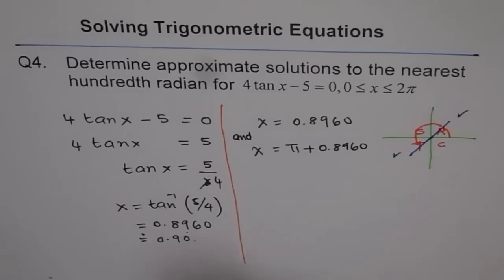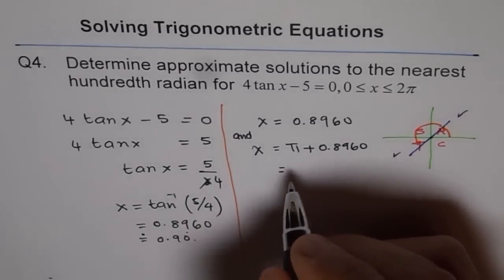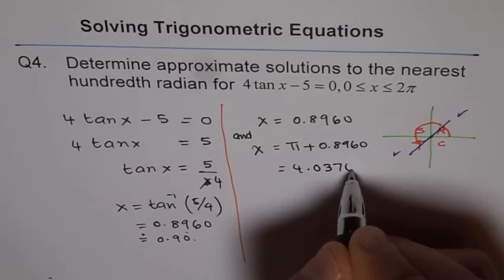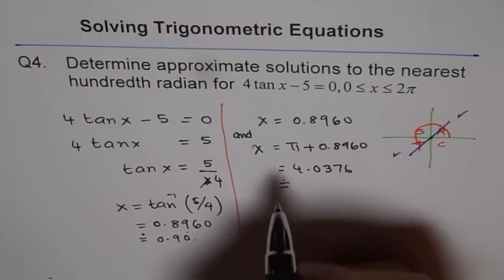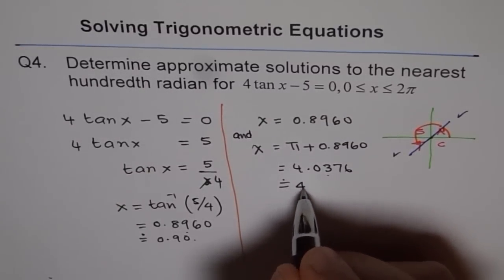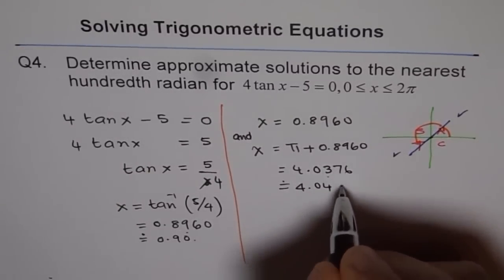We will add π to this and write down our answer. That gives us a value of 4.0376, and this can be rounded to the hundredth place, so it is 4.04 radians.